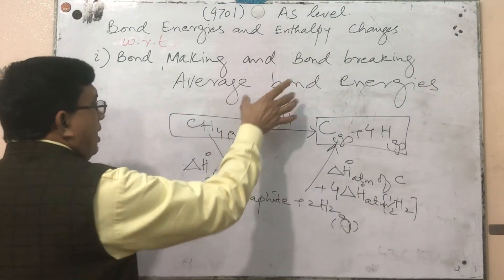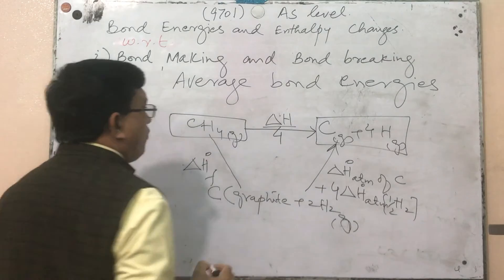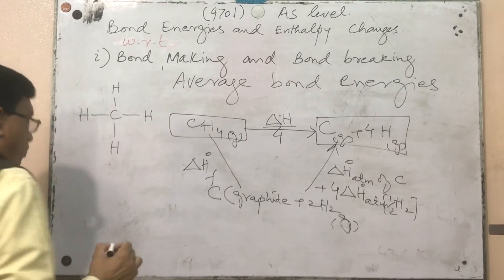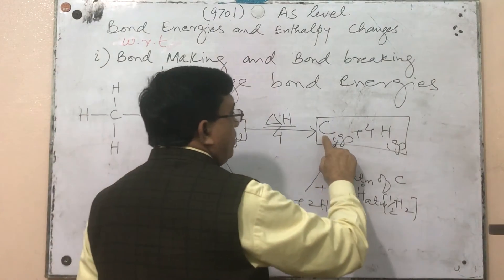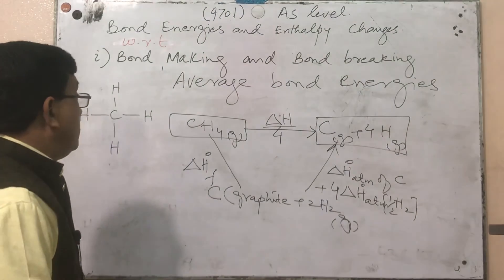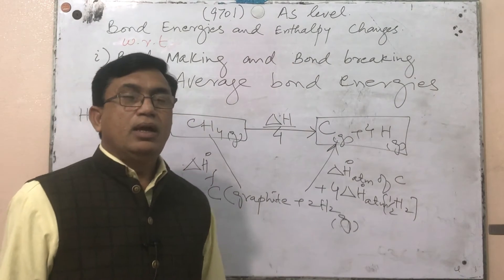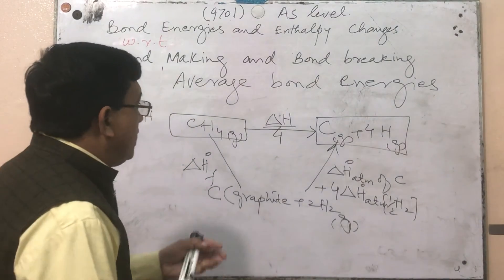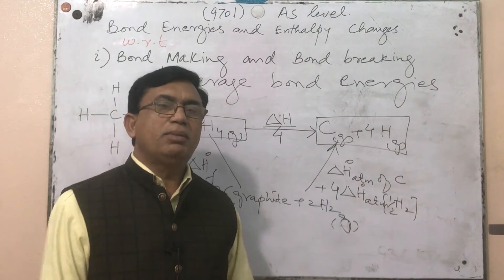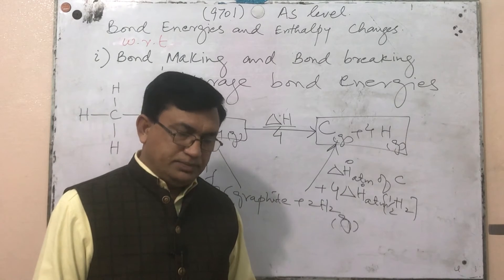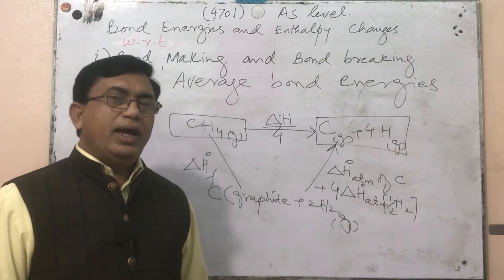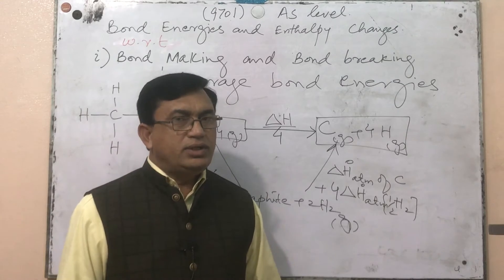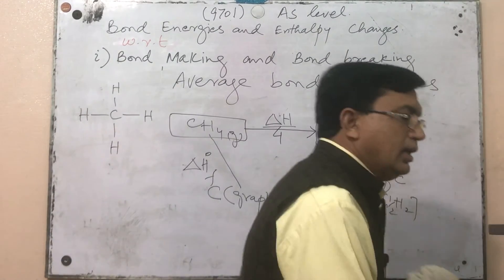The resulting total bond energy value is divided by four, because one methane molecule contains four C–H bonds. This gives the average C–H bond energy. This value is reliable because in the majority of organic compounds, C–H bonds exist in approximately the same environment. If atoms are attached to different groups, their bond energy will change, which is why we use average bond energy.